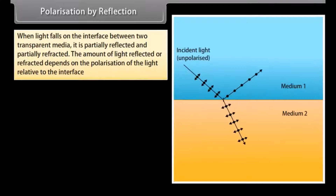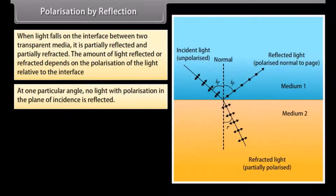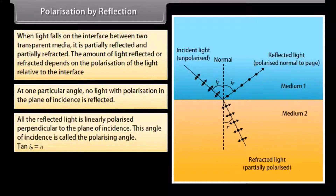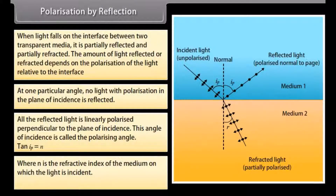When light falls on the interface between two transparent media, it is partially reflected and partially refracted. At one particular angle, no light with polarization in the plane of incidence is reflected; all reflected light is linearly polarized perpendicular to the plane of incidence. This angle is called the polarizing angle. tan(ip) = n, where n is the refractive index of the medium on which the light is incident. This equation is known as Brewster's law.